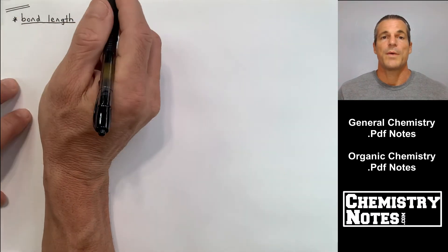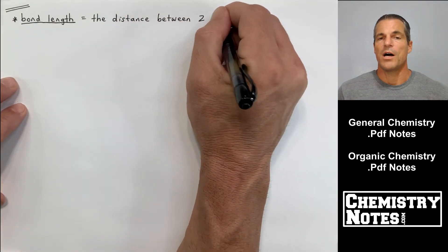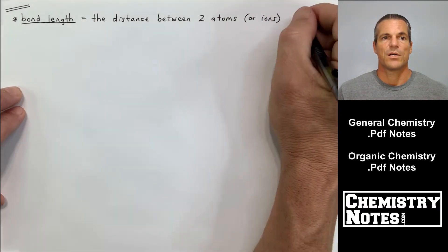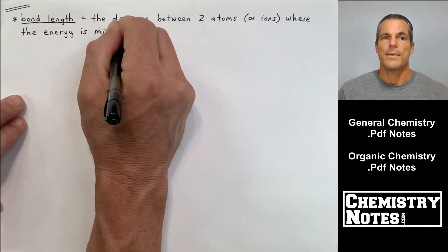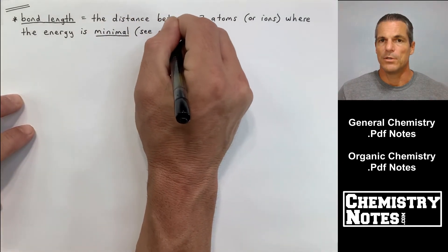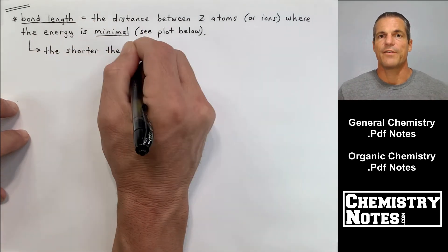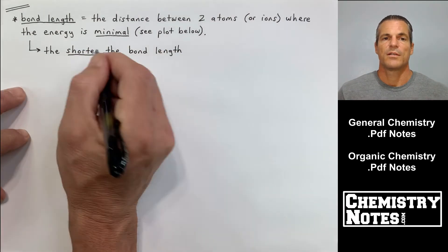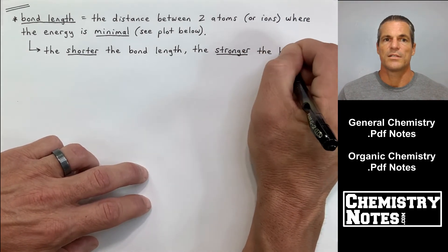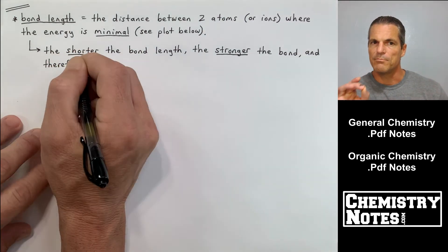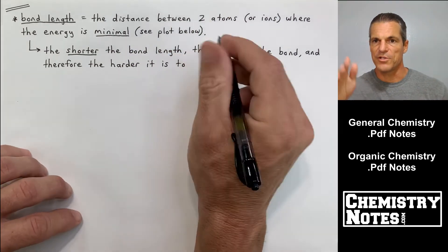Let's move to page 3. I've been talking about bond energy and bond length. Bond length is the distance between two atoms or ions where the energy is minimal. I'm going to draw a big graph at the bottom of this page, so please be patient as I sketch it out. There's a certain point where the energy is minimal, and that's where the bond length is calculated—at the bottom of the trough.